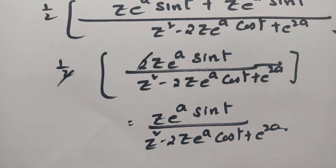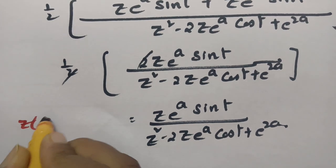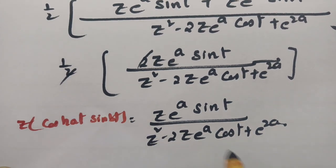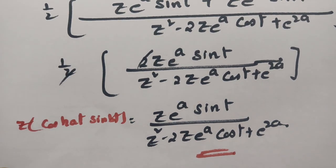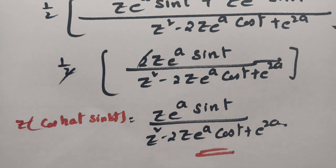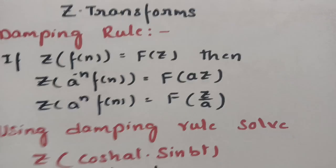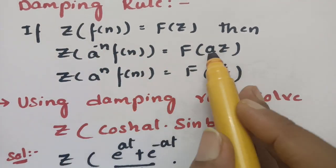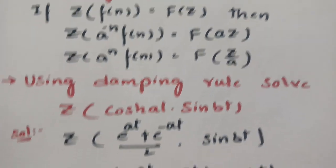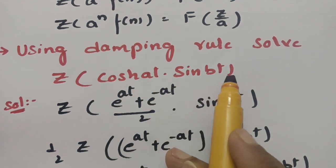So this is the Z transform of cosh(at) into sin(bt). Using the damping rule, we got the final value as z into e power a sin(t) divided by z square minus 2z e power a into cos(t) plus e power 2a. According to our damping rule: if there is minus, a is multiplied with z; if it is a positive value, we have to divide by a.